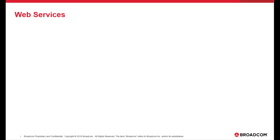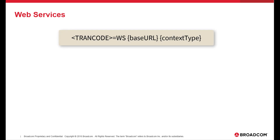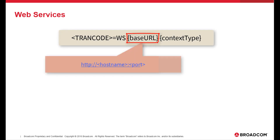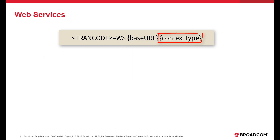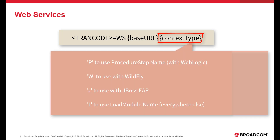For web services, the format of server manager properties is as follows. The base URL, for example, is provided. The context type is the part of the path of a GenWebService endpoint URL, which can be P for procedural step name, W for Wildfly, J for JBoss EAP, or L for load module name.